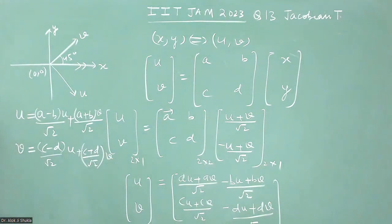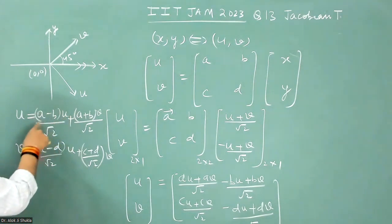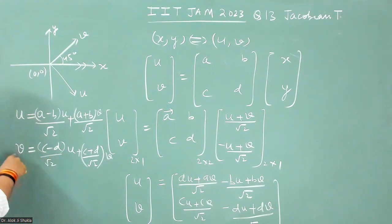And then you can just compare the values of u and v on the coefficients of u and v on both sides. Like here, this quantity is equal to one and this quantity is equal to zero. And here, this quantity is equal to zero and this quantity is equal to one. So comparing the coefficients,